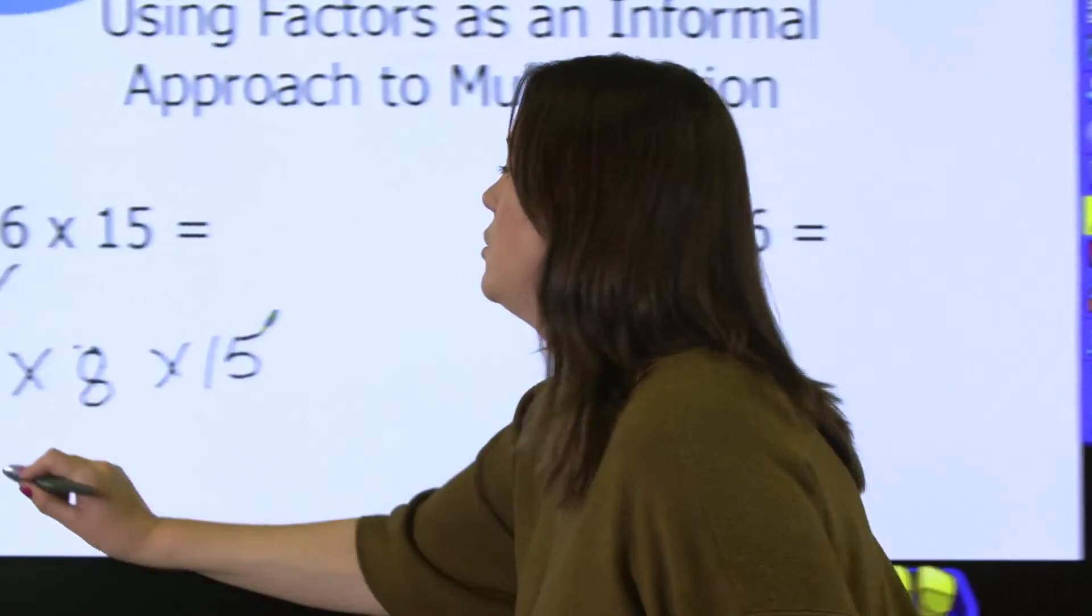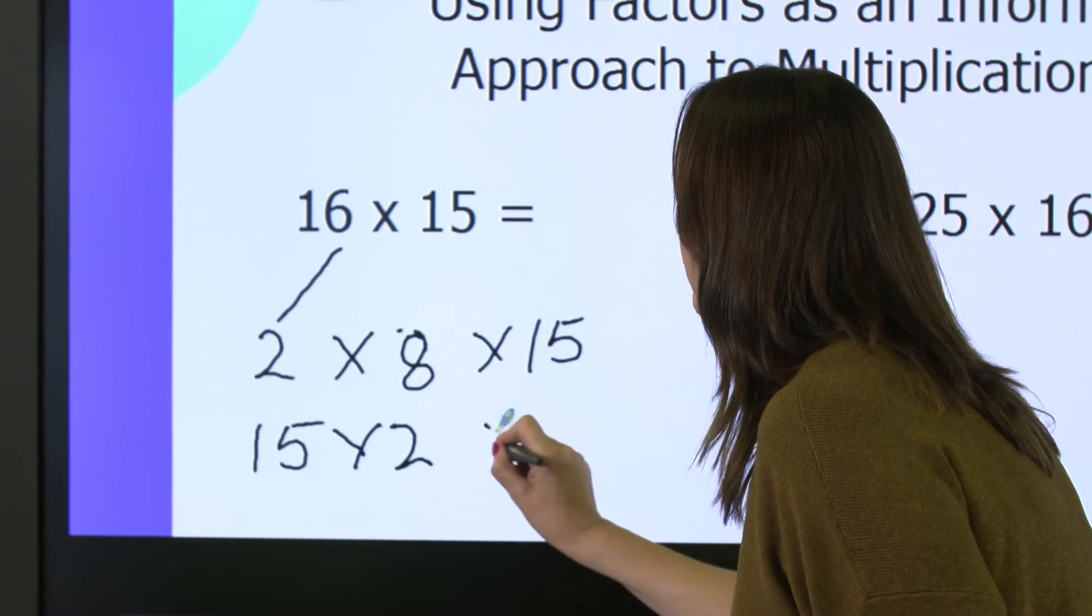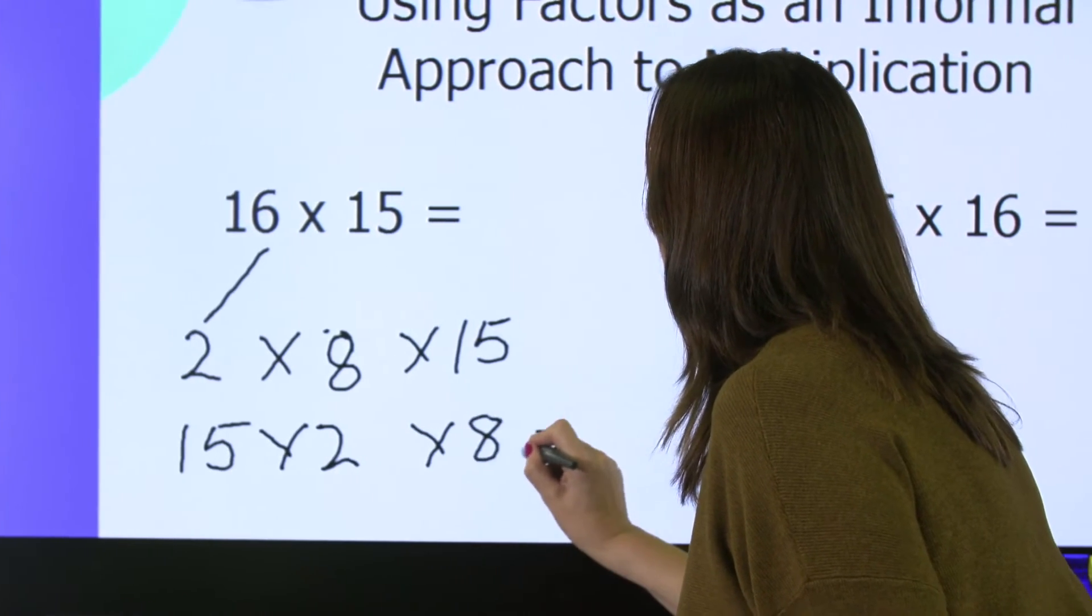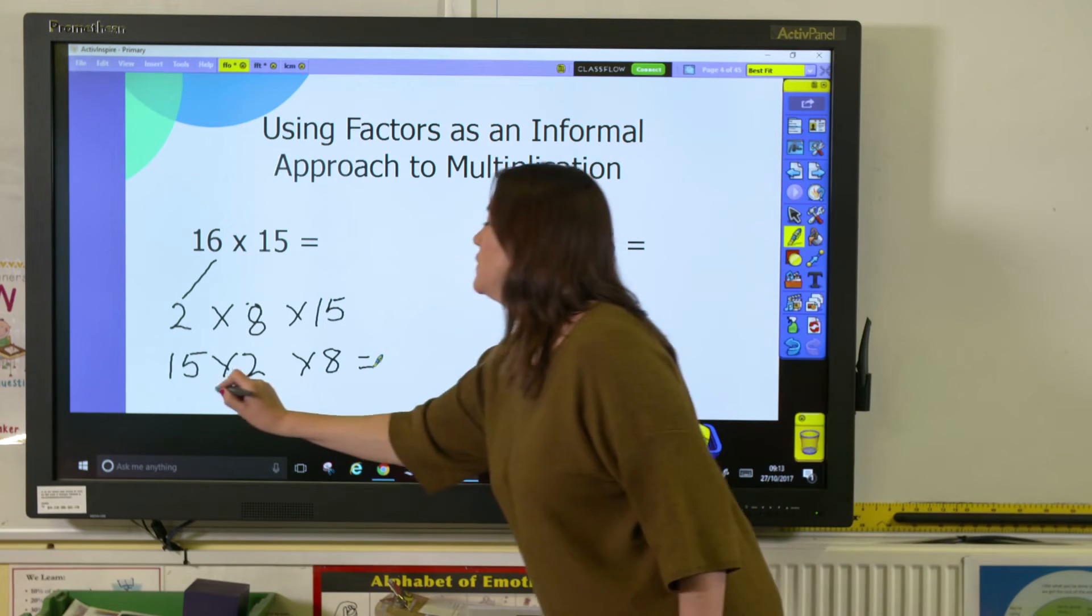So what we can do is we can turn the calculation into 15 times 2 times 8. And now it's a calculation that people can solve much easier. 15 times 2 is 30.